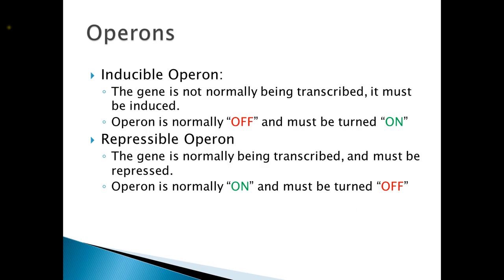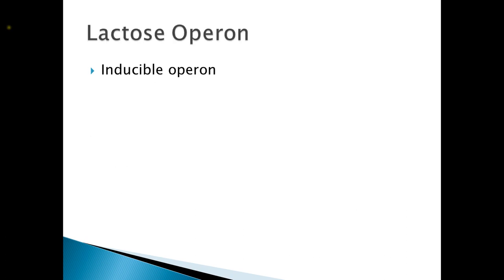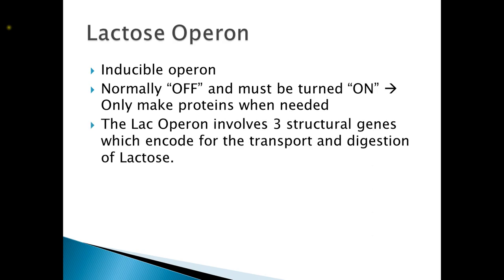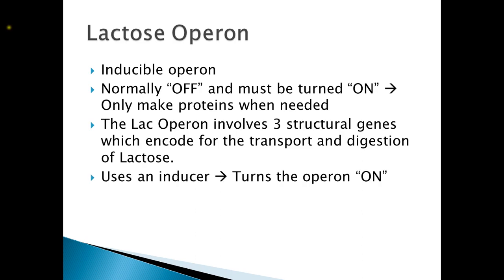Let's look at an example of each. First is the lactose operon, the classical example of an inducible operon. In a lactose operon, it is normally off and must be turned on. It will be turned on when it needs to make the structural proteins. In the case of the lactose operon, there are three structural genes, each of which codes for enzymes necessary for the transport and digestion of lactose. As the operon is normally off, it must be induced or turned on. In order to turn the operon on, we need an inducer, and in the case of the lactose operon, lactose is the inducer.